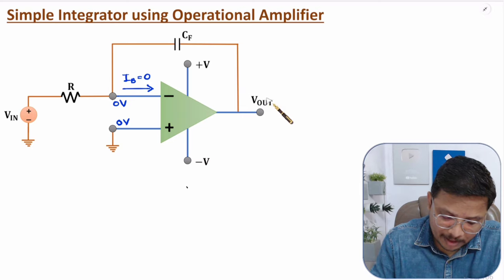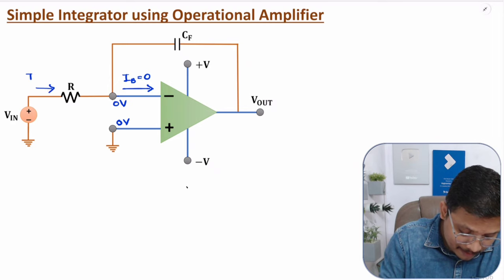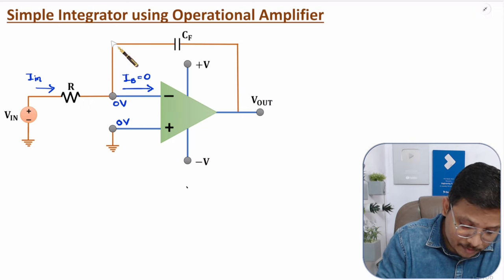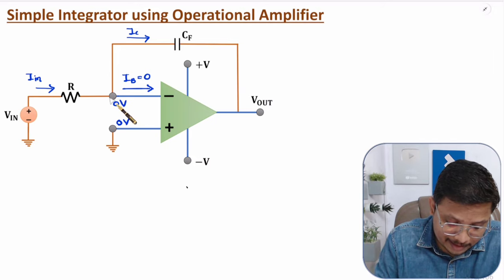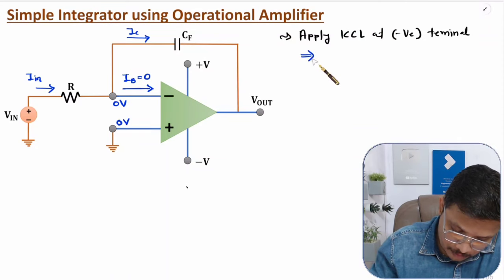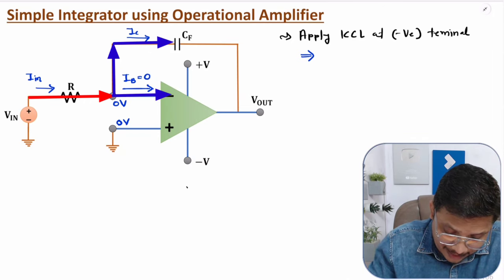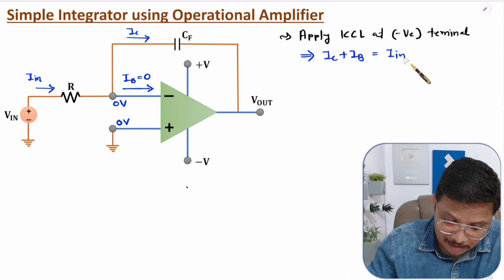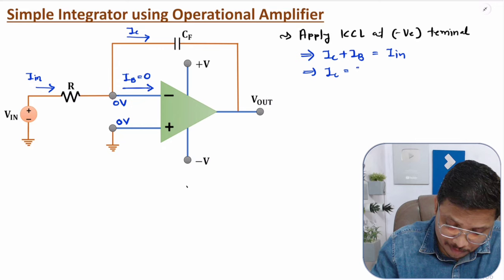Now let us derive the output equation. Based on Vin, the current over here is Iin. This Iin comes and gets split into Ib and, through the capacitor, a current Ic. I will apply KCL at the negative terminal: incoming current equals outgoing current. Outgoing currents are Ic and Ib, and incoming current is Iin. Since Ib is negligible, you can say Ic equals Iin.